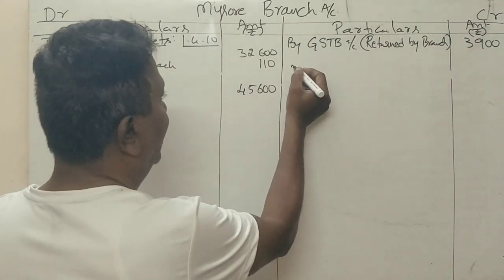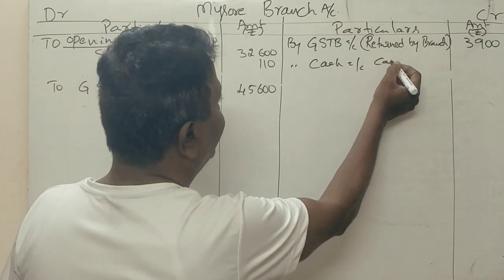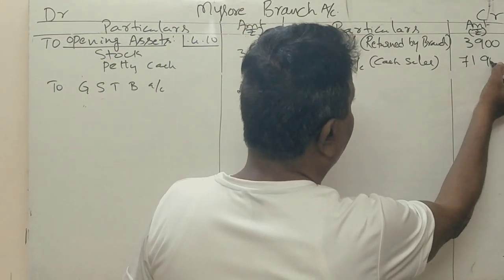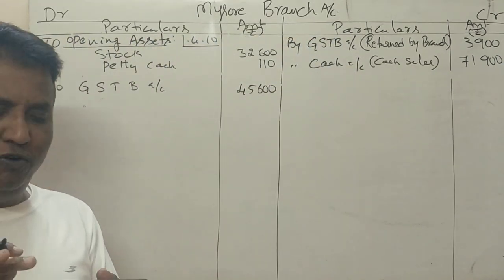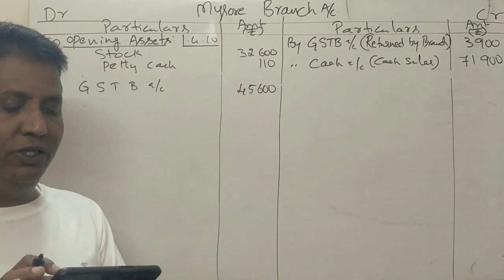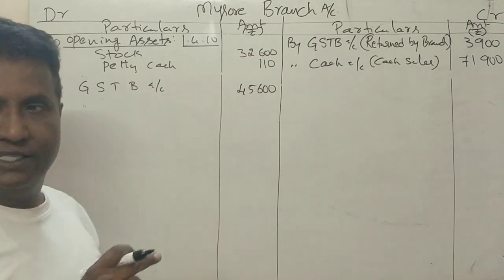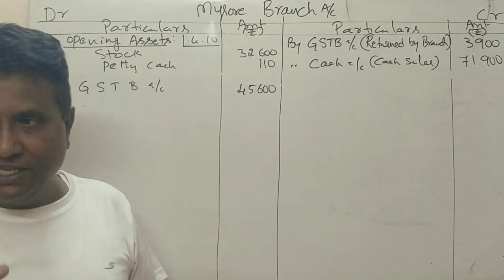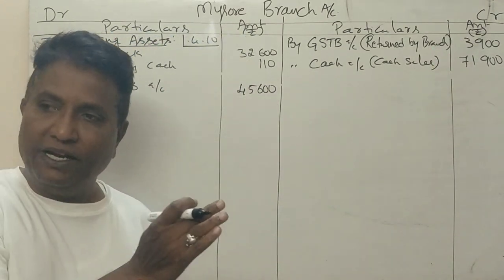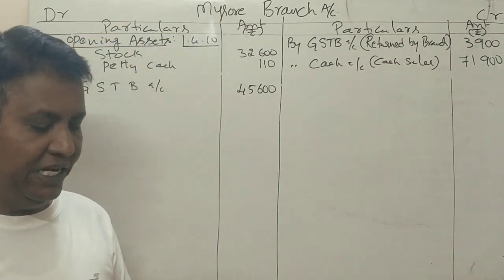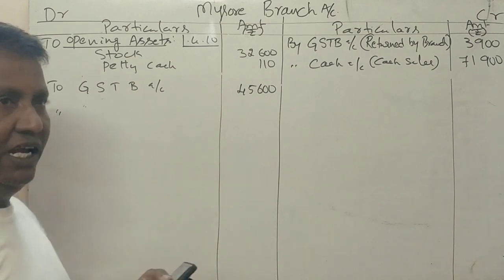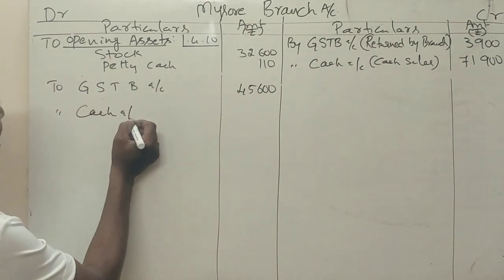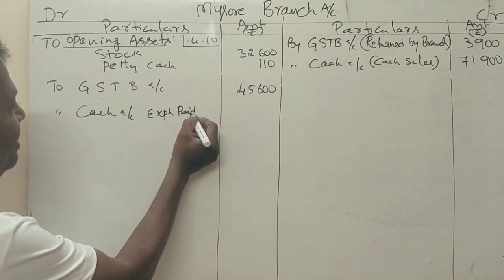For cash sales at the branch, the cash account is credited. Cash sales — 71,200 rupees — are entered on the credit side of the branch account. Expenses paid by the head office on behalf of the branch are also entered. These include salary — 12,800 rupees — and rent — 3,000 rupees.